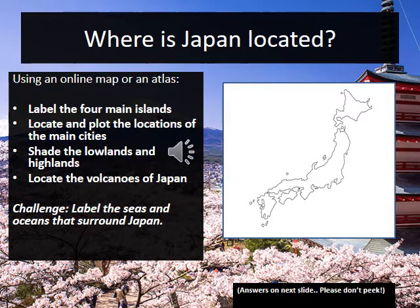Now let's map the main physical features of Japan. Don't worry if you don't know them — the detail is to follow. We're going to label the four main islands in Japan, find and plot the locations of the main cities, use some shading for the lowland and highland areas, and look at where the volcanoes of Japan are. If you want a bit more of a challenge, you can also label the seas and oceans that surround Japan.